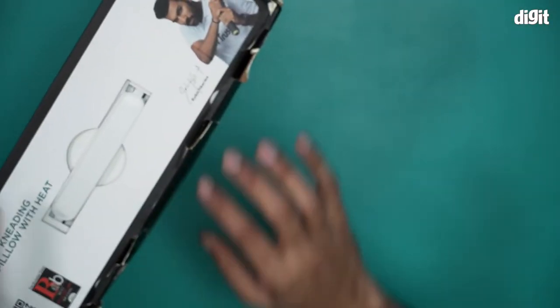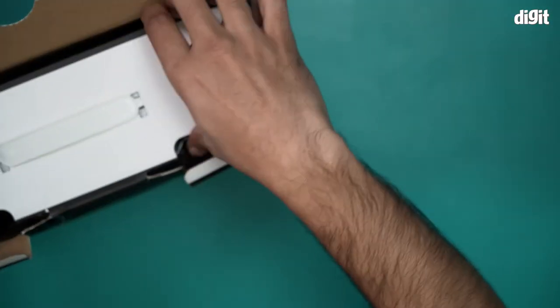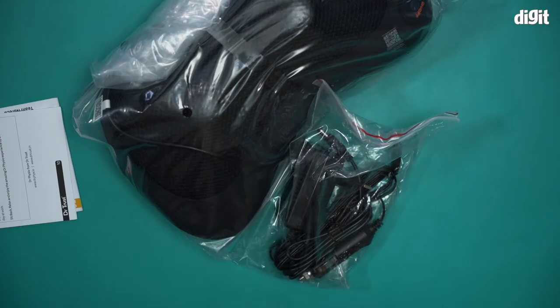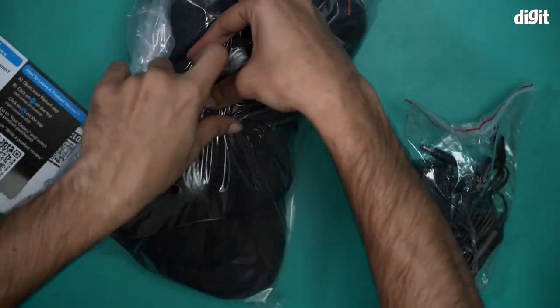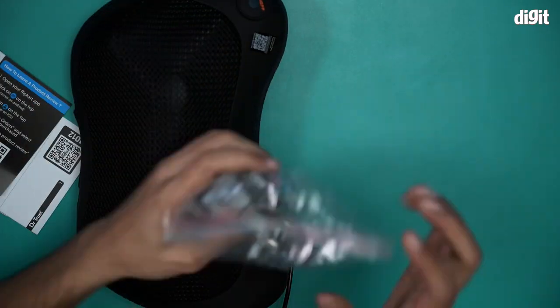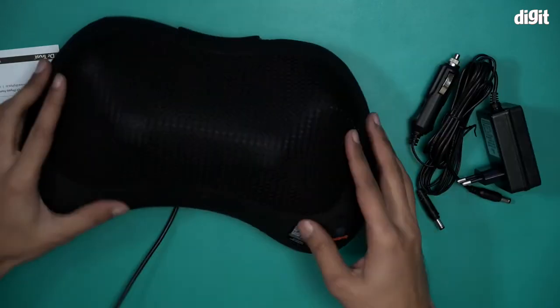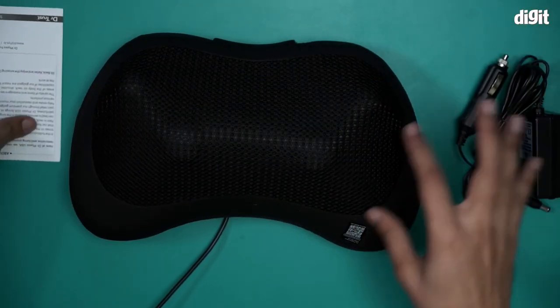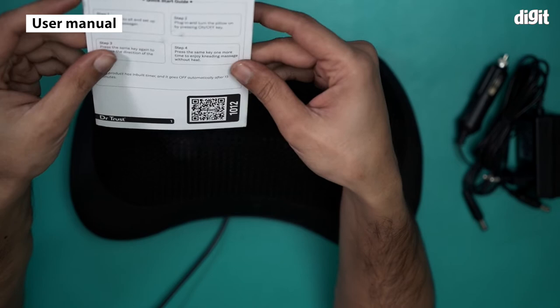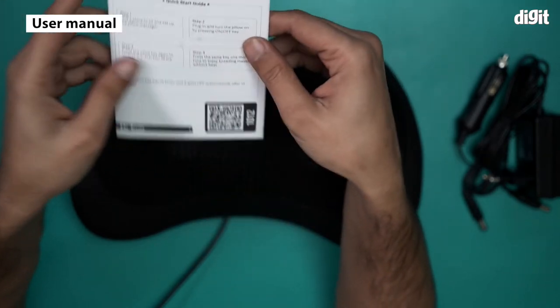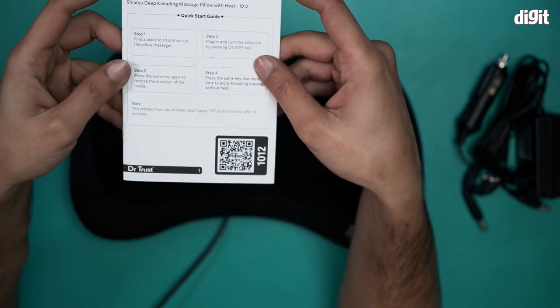Let's open this box and see what's inside. There you go. This is what you'll find inside the box. Right at the top, we have a user manual from Dr. Trust. A quick start guide basically.